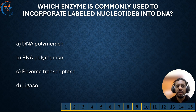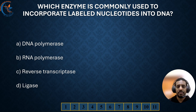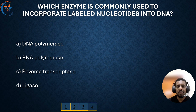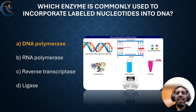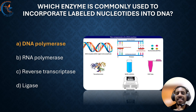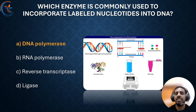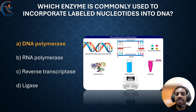Let's see the second question we have today. Which enzyme is commonly used to incorporate labeled nucleotides into DNA? The correct answer is DNA polymerase. DNA polymerase is the key enzyme that incorporates labeled nucleotides into DNA strands. This process is essential in techniques like PCR and DNA synthesis, where labeled nucleotides help researchers detect and analyze specific DNA sequences. By tagging DNA with these markers, scientists can track genetic material more easily, improving accuracy in studies and experiments.